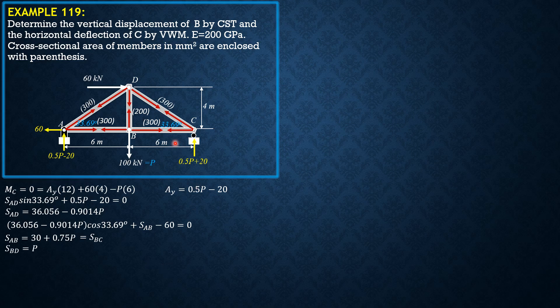Then finally at joint C, summation forces Y equals 0, so SCD sine 33.69 plus 0.5P plus 20 equals 0. So SCD is negative 0.9014P minus 36.056.